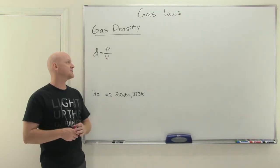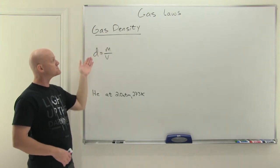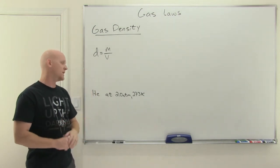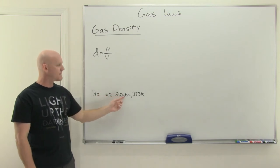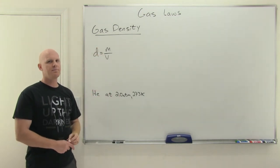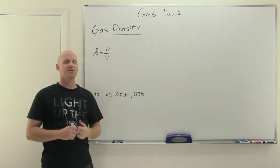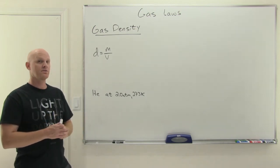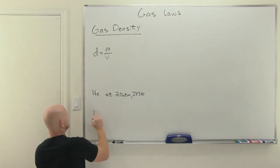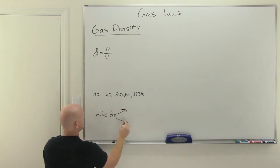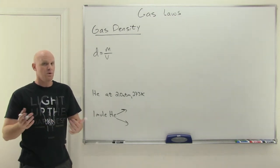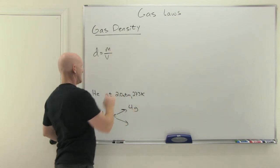Now let's look at gas density. Density is mass per unit volume, and this expression still holds for gases. The calculation we want to do is: what is the density of helium at 2 atmospheres and 273 Kelvin? Getting the mass and volume looks problematic, but density is an intensive property — it doesn't matter what size sample you have. So I'm going to pick one mole as a convenient sample size. One mole of helium from the periodic table weighs 4 grams, so I have my mass, and now I need to get a volume.